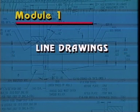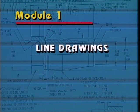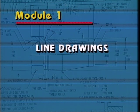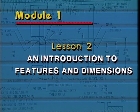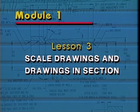This is Module 1 of the Excel Training No Sweat Blueprint Reading Program: Line Drawings. It will guide you through the process of reading blueprints. Module 1 is divided into three lessons. Lesson 1 covers projections, or views, and types of lines. Lesson 2 introduces the way part features are shown on drawings and how they're dimensioned. Lesson 3 covers scale drawings and how parts are drawn in section on blueprints.